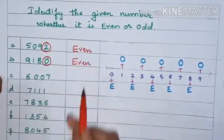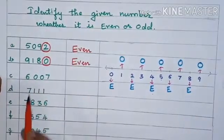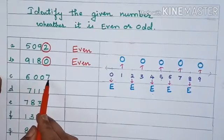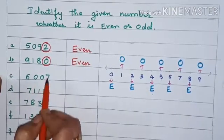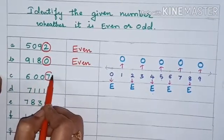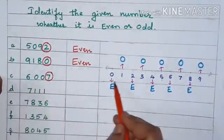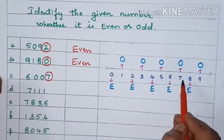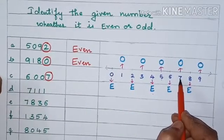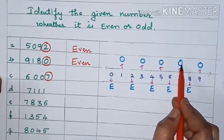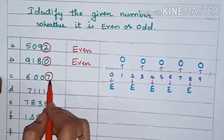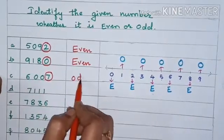Now next is 6,007. So what is the last digit here? 7. We will see here on the number line — 7 is odd. So this 6,007 is an odd number.